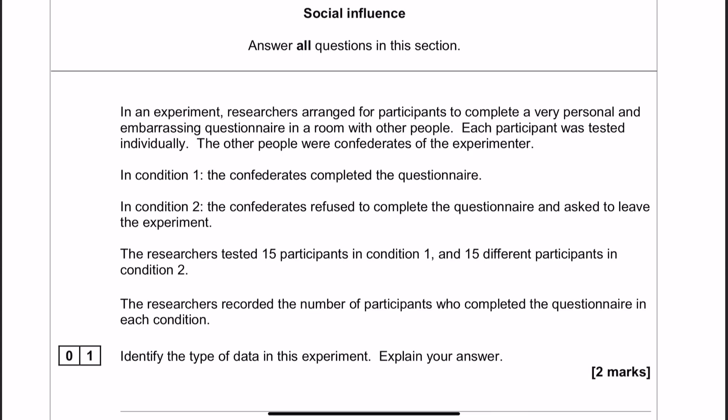So using our knowledge of ASH, we can guess that in condition one, they're going to go along with it because of normative social influence. And in condition two, they're not going to go along with it because they have social support.